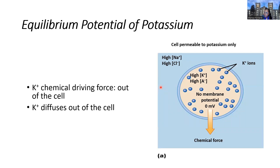To describe the establishment of the resting membrane potential, we're going to think about a cell that is theoretically only permeable to potassium first, and then a cell that is theoretically only permeable to sodium. In actuality, no such cells exist that are only permeable to one ion, but in order to dissect these two ionic movements individually and then combine them, we're going to look at each hypothetical cell separately and then put those two pieces together.